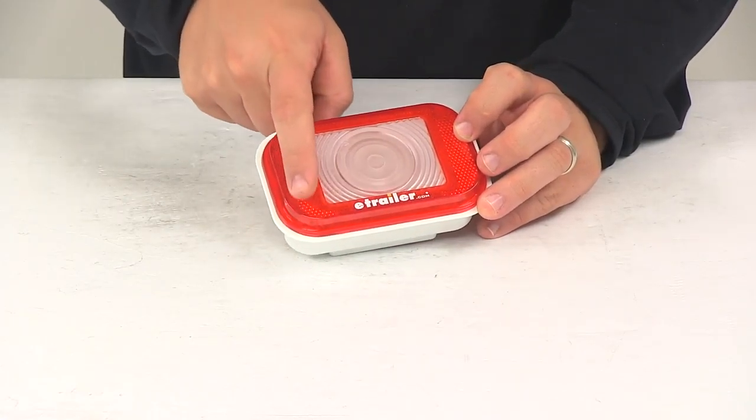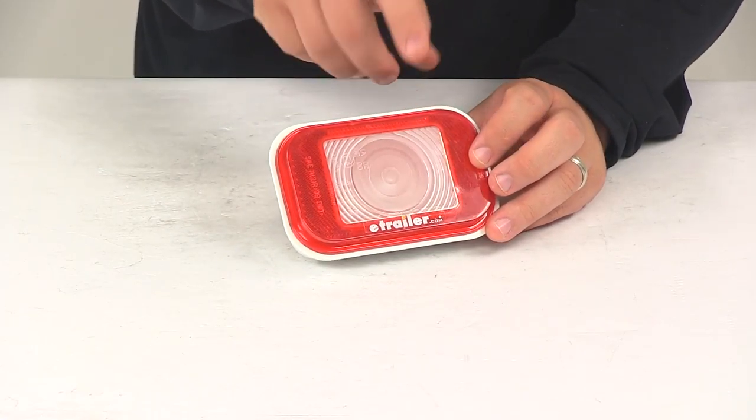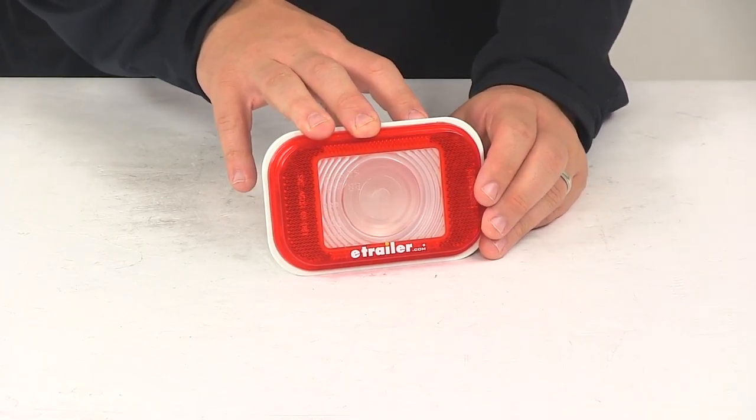Going around the perimeter of the light, it's going to feature that red reflex reflector. It's built in. That's going to eliminate the need for a separate reflector.